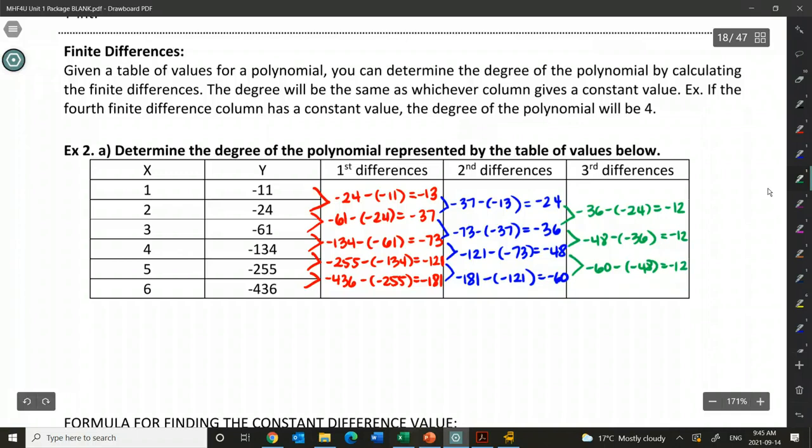And we actually get negative 12 for all of these. I can stop once I have that, right? These are all negative 12s, which is good. And what this actually tells me is that the degree of my polynomial is 3. And this tells me the degree is 3 because my set of third finite differences all have the same number. It does not matter what that number is.